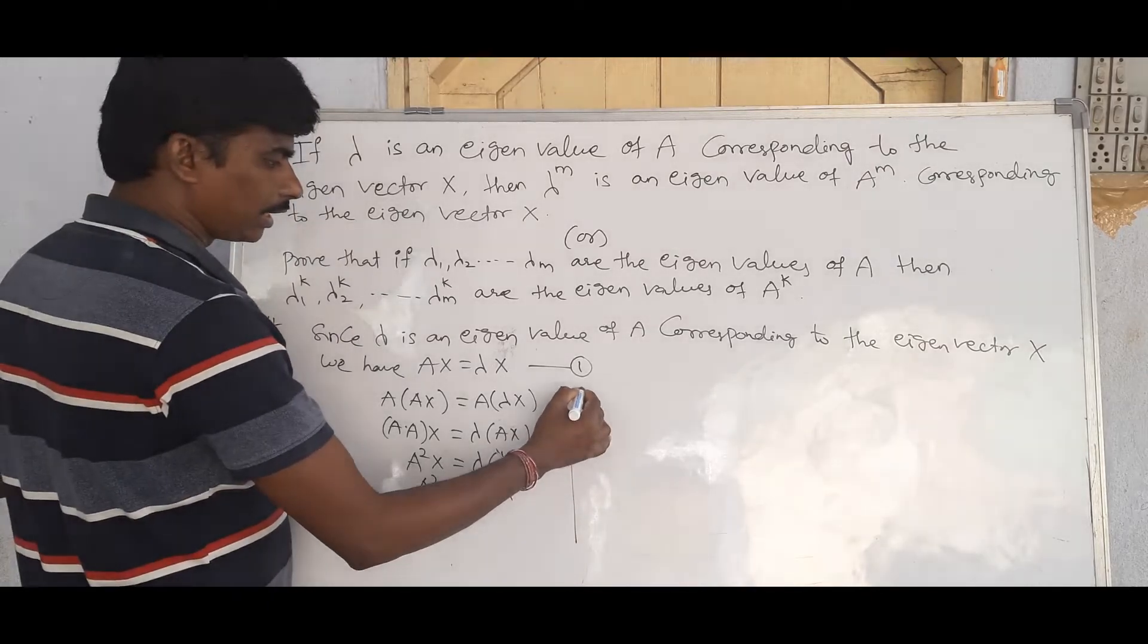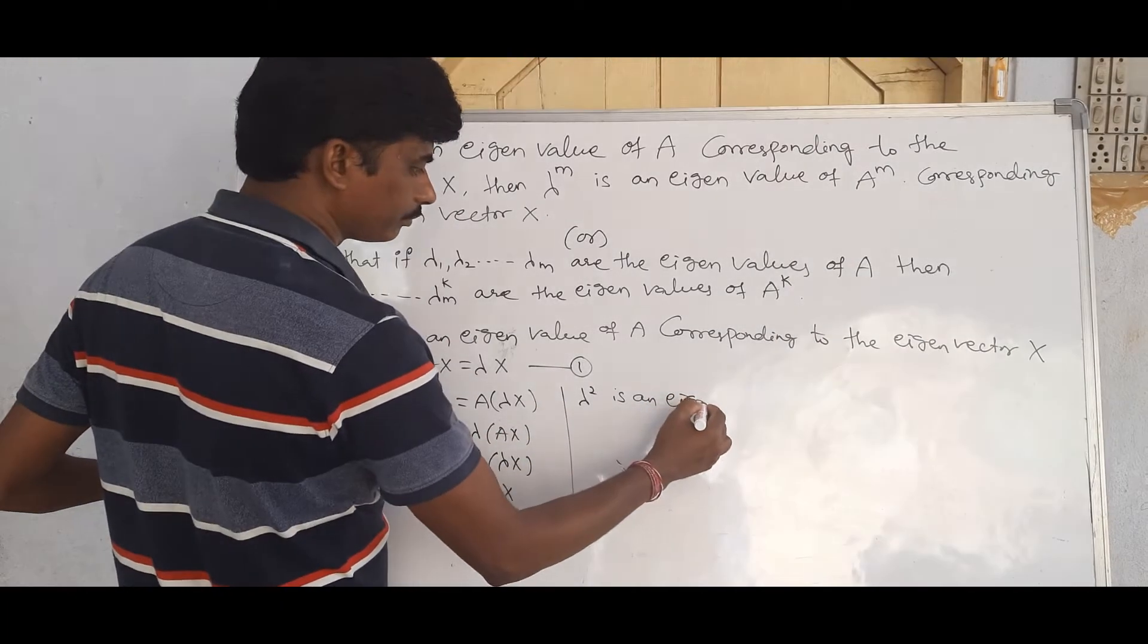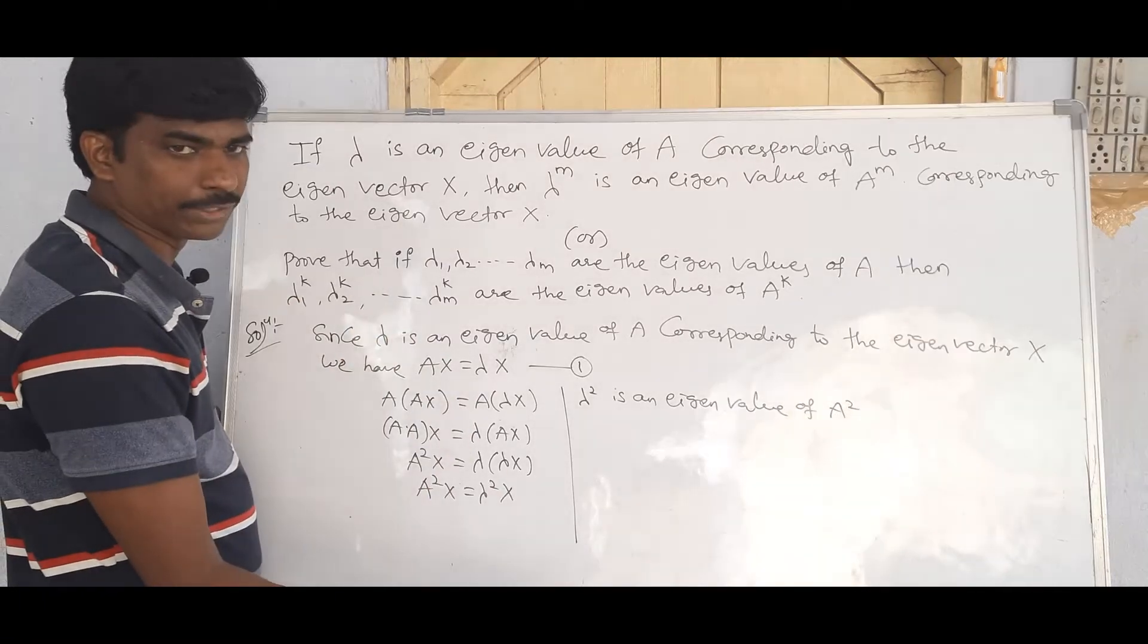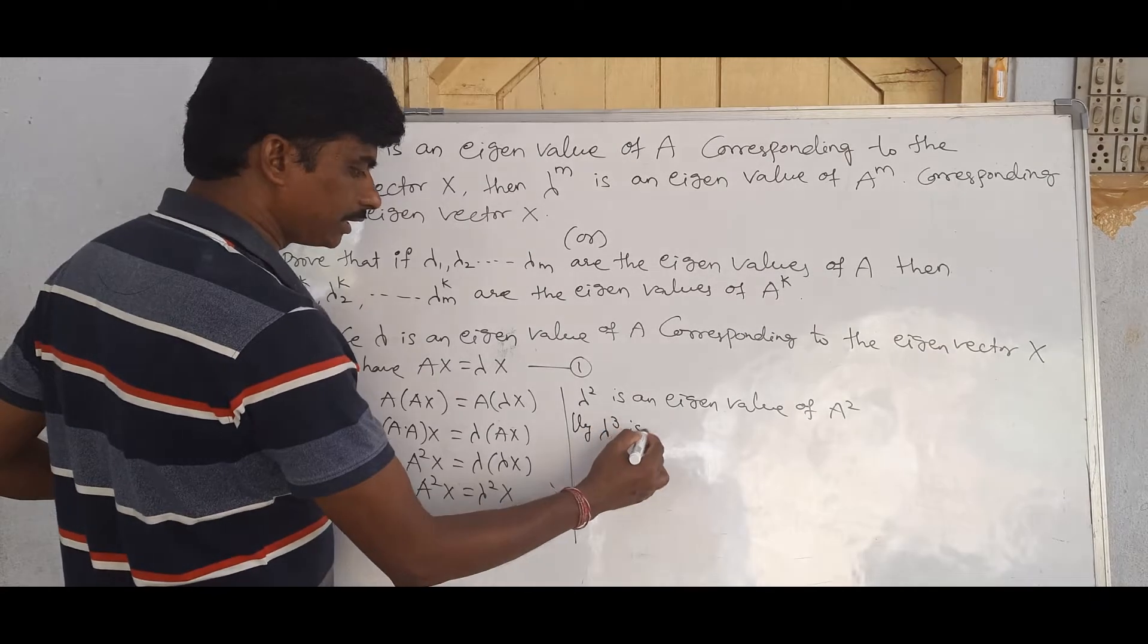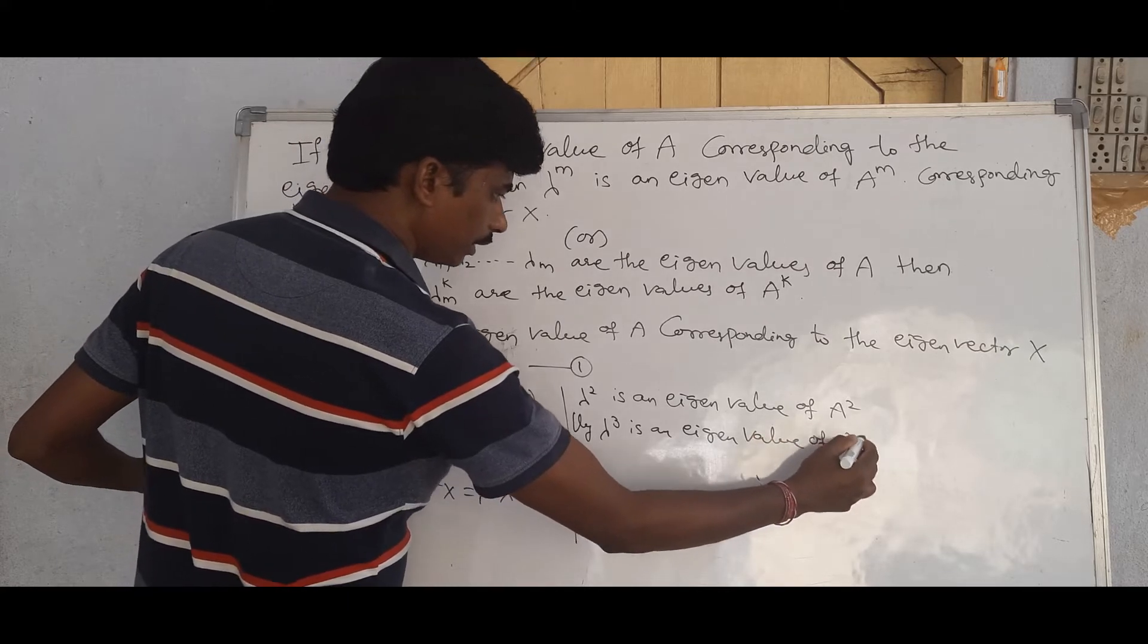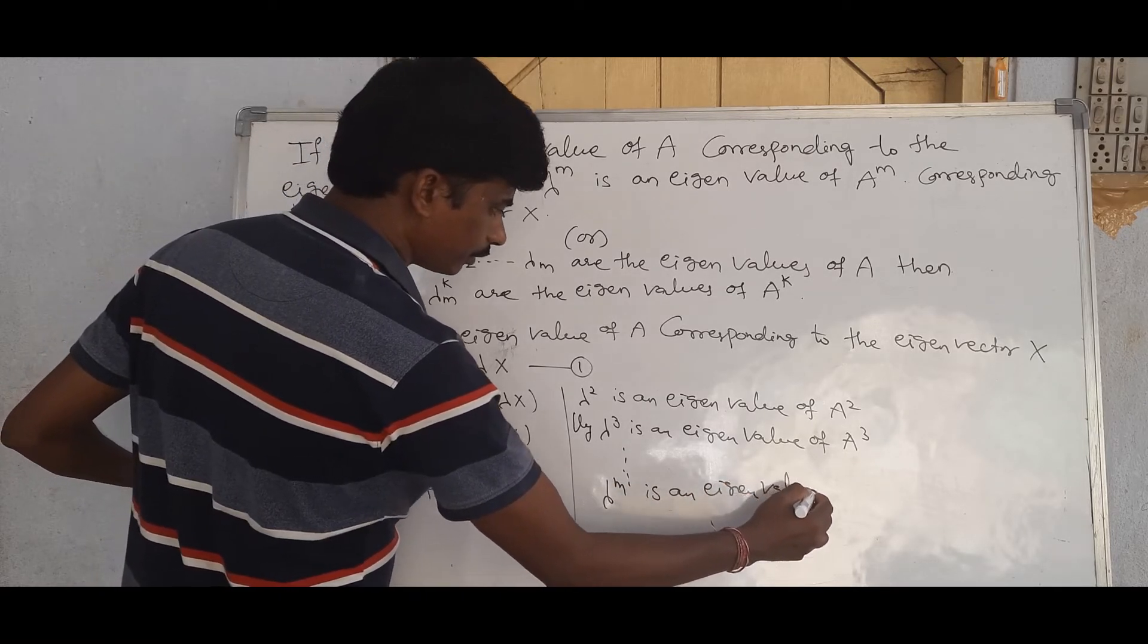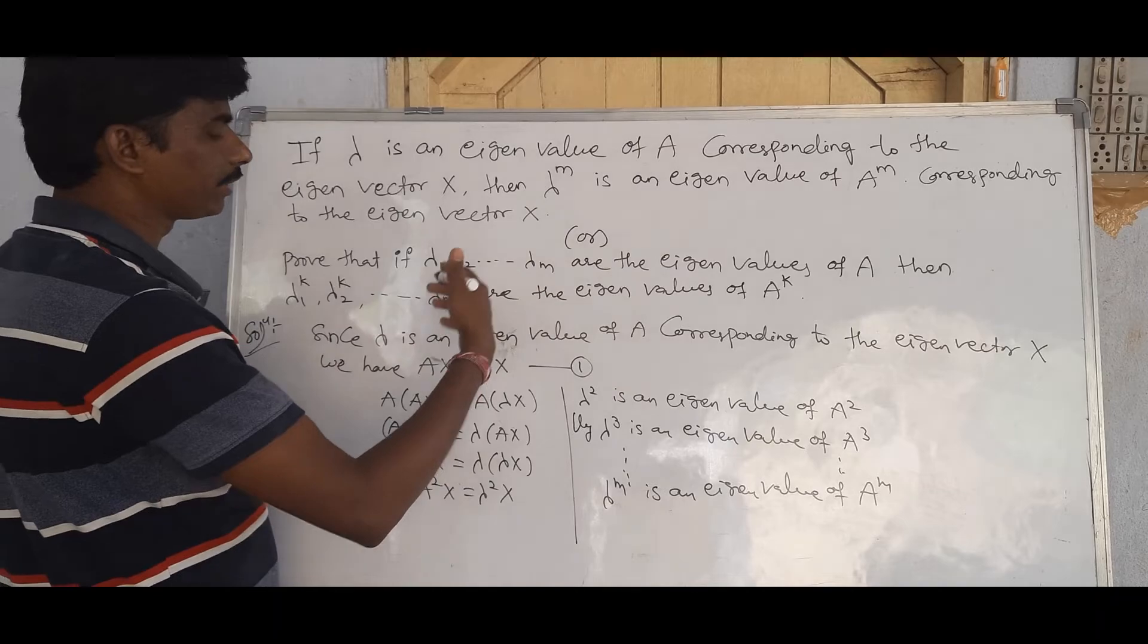Similarly, this is A cube, lambda cube. Lambda cube is an eigenvalue of A cube. So on, lambda power M is an eigenvalue of A power M corresponding to the eigenvector capital X.